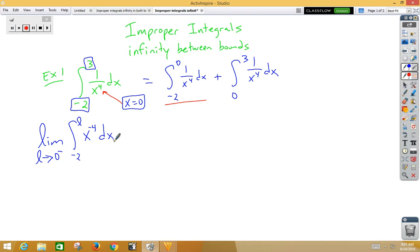Now if we integrate x to the negative 4, we end up getting, we have the limit as l approaches 0 from the left side. And that would be negative 1 over 3x cubed from negative 2 to l. So now we've got the limit as l approaches 0 from the left side of negative 1 over 3l cubed minus negative 1 over 3 times negative 2 cubed.